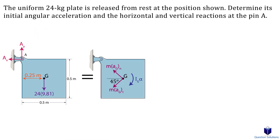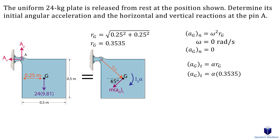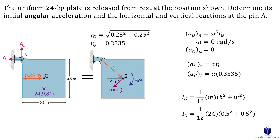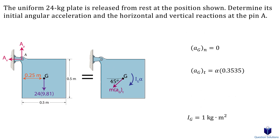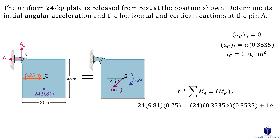The normal acceleration is angular velocity squared times the distance from pin A to the center of mass. Since the plate starts from rest, angular velocity is zero, so normal acceleration is zero. The tangential acceleration is angular acceleration times the distance from pin A to the center of mass, found using the Pythagorean theorem. The moment about the center of mass is the mass moment of inertia times angular acceleration. Using the formula for a uniform square plate with mass 24 kg and side length 0.5 m, we calculate the mass moment of inertia. We pick clockwise as positive and write a moment equation about point A.